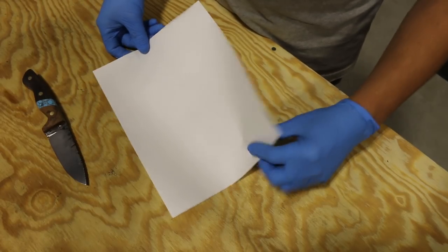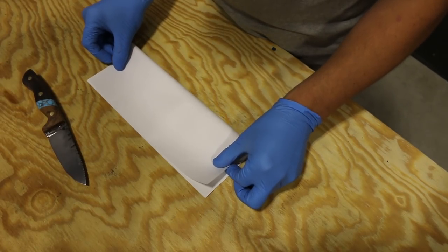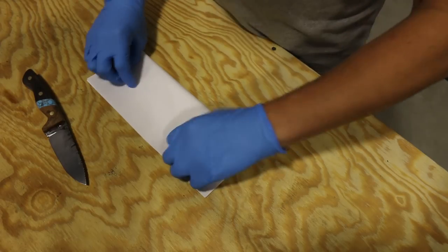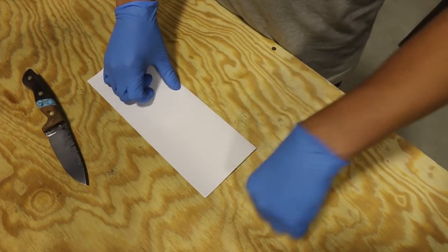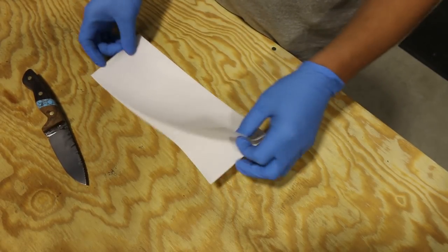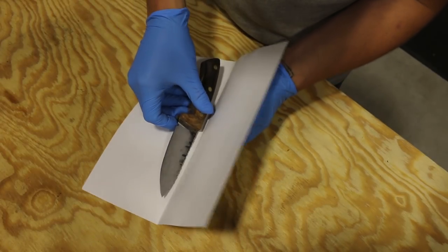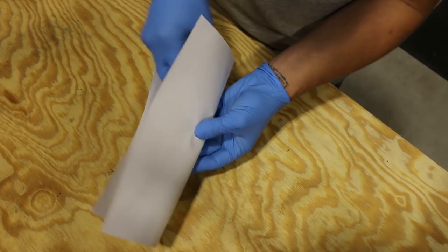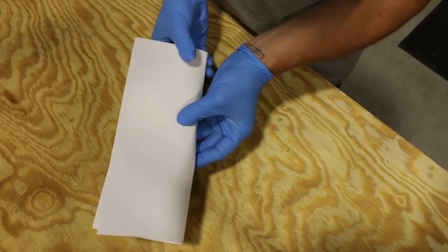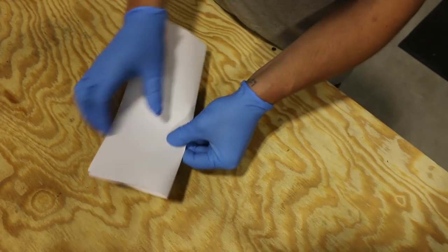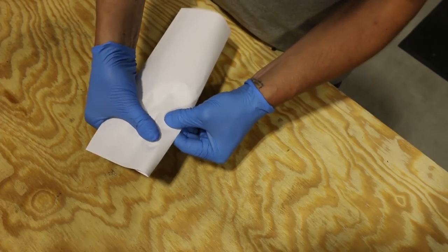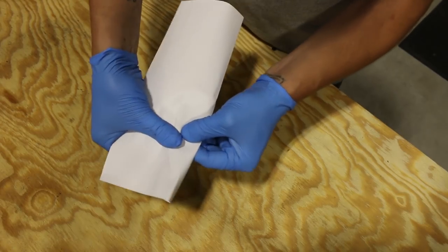The first thing I do is design the sheath on paper. I start by folding the paper in half. I put the knife inside, spine against the fold. Using light pressure, I crease the paper down the edge of the blade.